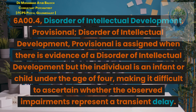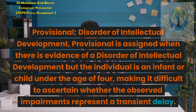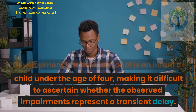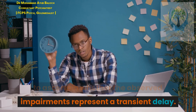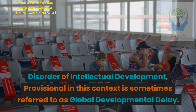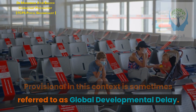6.00.4 Disorder of Intellectual Development, Provisional. Disorder of Intellectual Development, Provisional is assigned when there is evidence of a disorder of intellectual development but the individual is an infant or child under the age of four, making it difficult to ascertain whether the observed impairments represent a transient delay. In this context, it is sometimes referred to as global developmental delay.